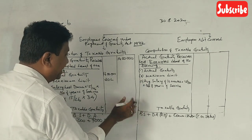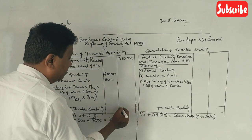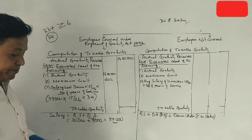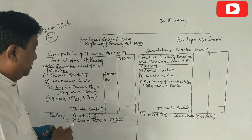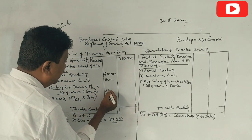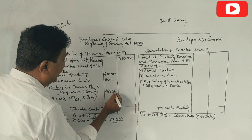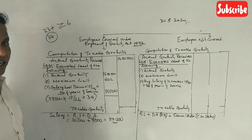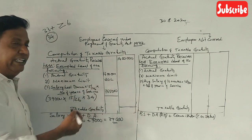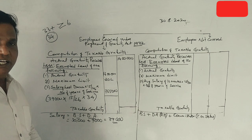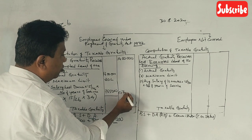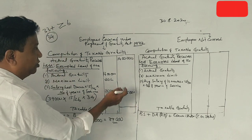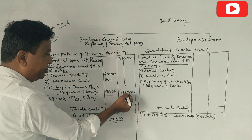Now we check the exemption limit. The calculated amount is: 15/26 × 39,000 × 34 = 7,65,000 rupees. So the three figures are: actual gratuity 14,00,000; maximum limit 20,00,000; and the formula amount 7,65,000. The least of these is 7,65,000, which is the exempt amount.